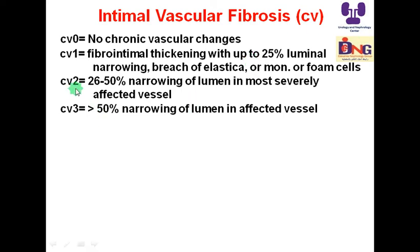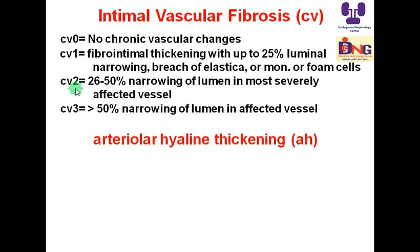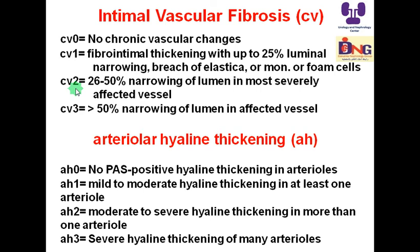CV2 is 26 to 50% narrowing of the lumen in the most severely affected vessels, and CV3 is more than 50% narrowing. Arterial hyaline thickening is scored as AH: AH0 means no hyaline thickening of arterioles, AH1 is mild to moderate, AH2 is moderate, and AH3 is severe hyaline thickening of many arterioles.